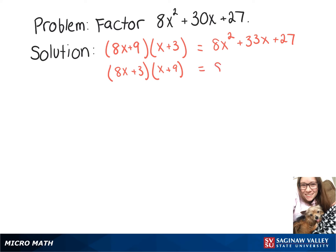Let's try the next one. When we FOIL this out, we get 8x squared plus 75x plus 27.